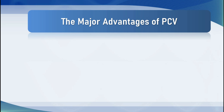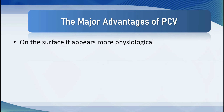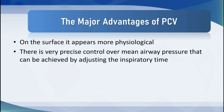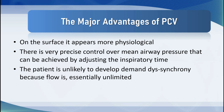On the surface, pressure control ventilation has a huge advantage because it's really physiological. The thoracic pump is a negative pressure ventilator and pressure control modes mimic this, particularly when the patient is breathing spontaneously. There is also really precise control over mean airway pressures, achievable by adjusting the inspiratory time. The patient is also unlikely to develop demand flow dyssynchrony because flow is essentially unlimited due to the large negative pressure ramp.